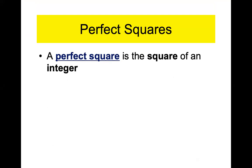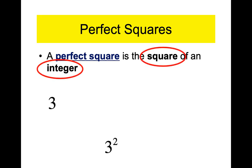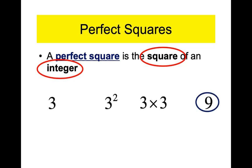Don't write this down yet, but a perfect square is a square of an integer. Somebody give me an integer — one. One times one is one, so one is a perfect square. Another integer — seven. Seven times seven is 49, so 49 is a perfect square. You start with an integer, you square it, and the answer — nine — that answer is the perfect square. It's not three, it's not three times three, it's the answer to when you take an integer and square it.